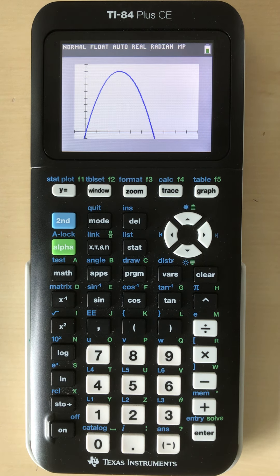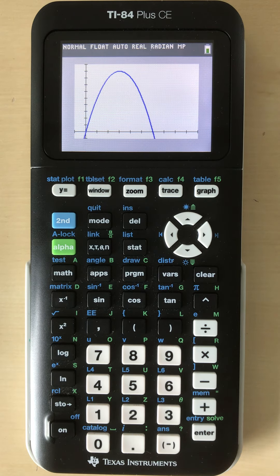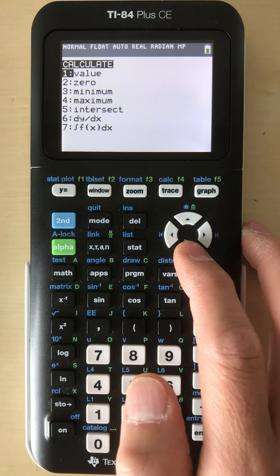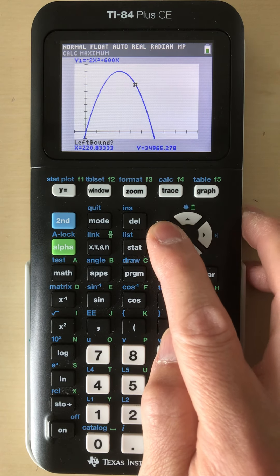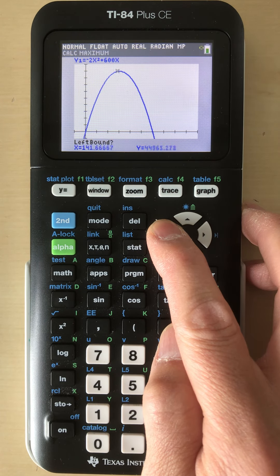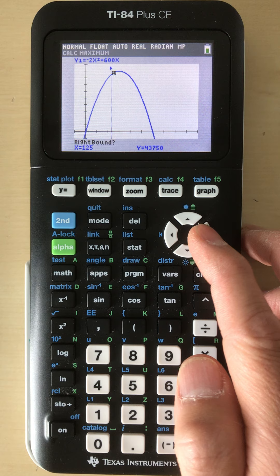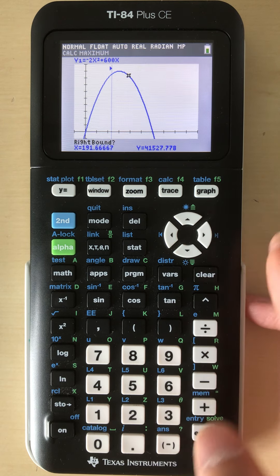Determine the maximum area of the lot. So that should tell you we're looking for the vertex. Go to 2nd, calculate. We're going to go to maximum. Do your thing here. Left bound right there, hit enter. Right bound right here, hit enter.